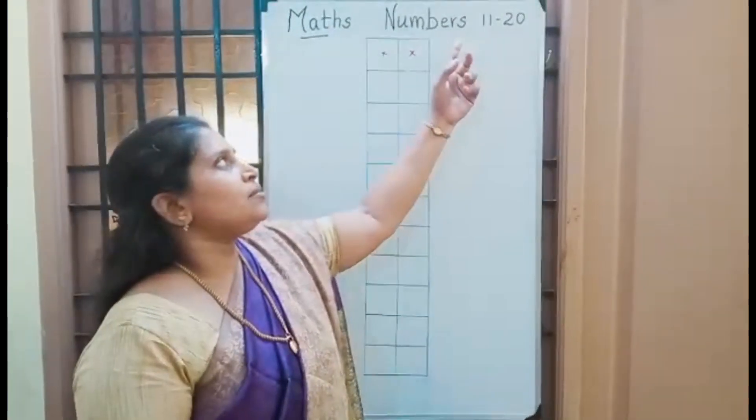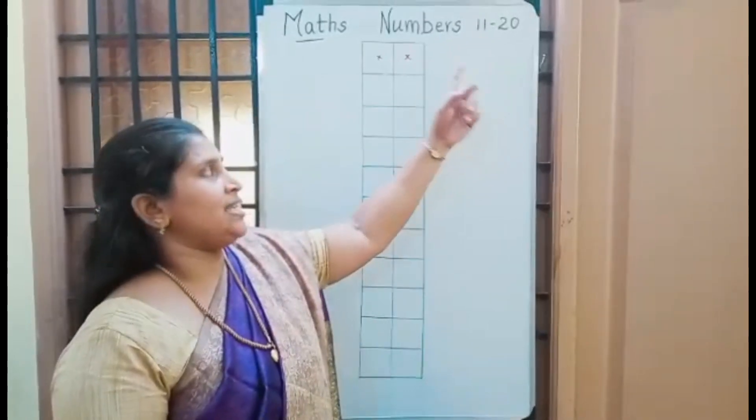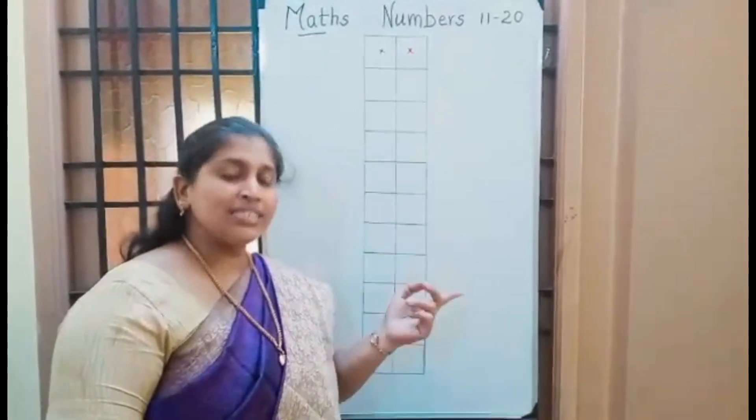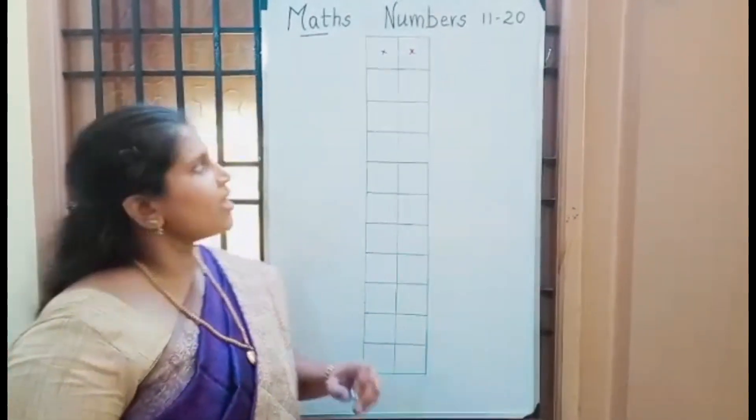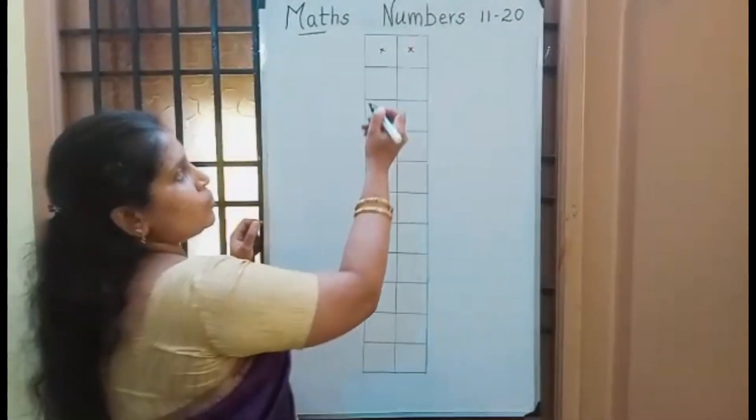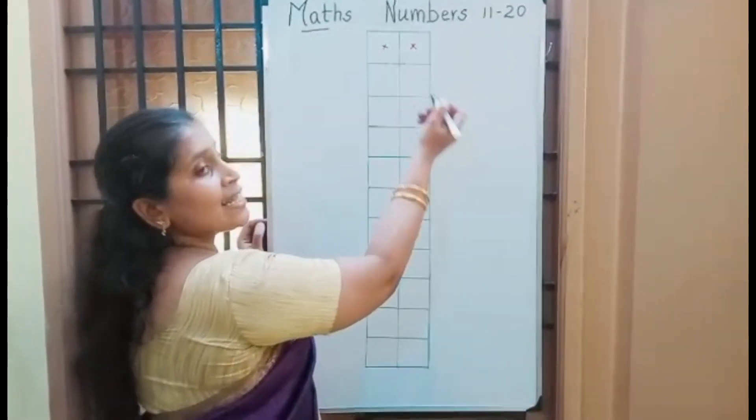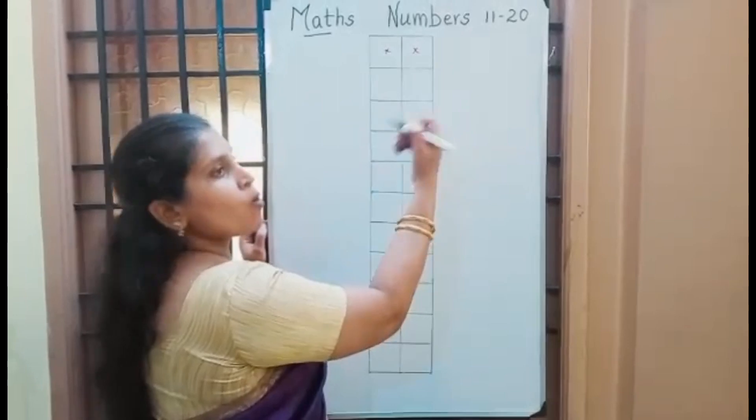Both have numbers 11 to 20, they have both 1s and 10s. So the first number will be in 10s place, the second number will be in 1s place.